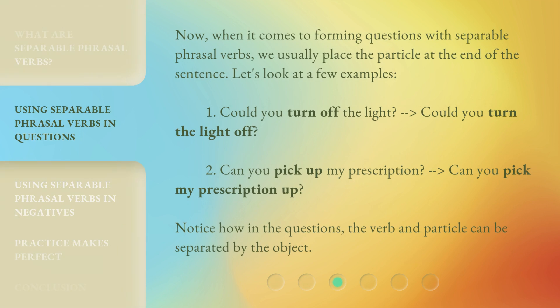Now, when it comes to forming questions with separable phrasal verbs, we usually place the particle at the end of the sentence. Let's look at a few examples. Could you turn off the light? Or: Could you turn the light off? Can you pick up my prescription? Or: Can you pick my prescription up? Notice how in the questions, the verb and particle can be separated by the object.